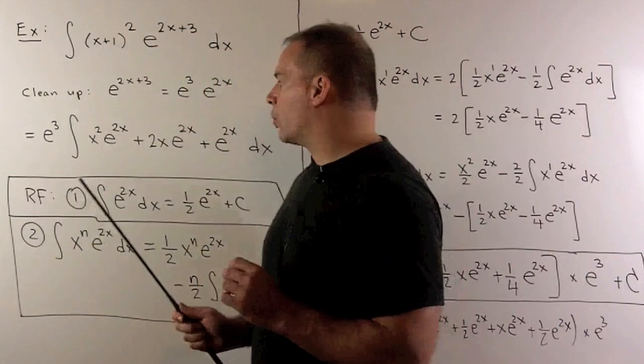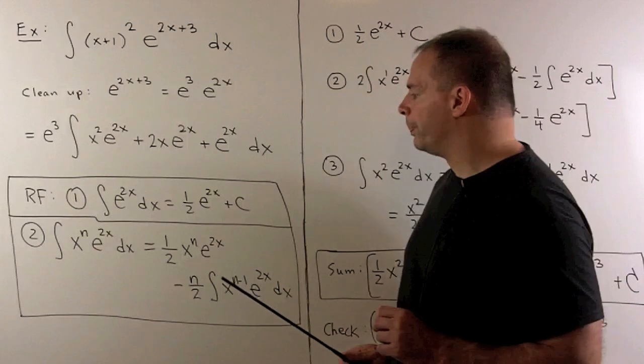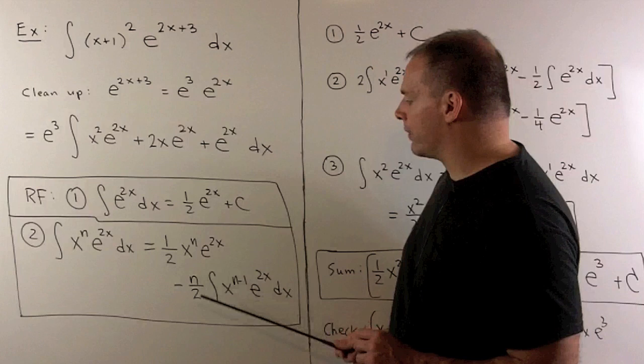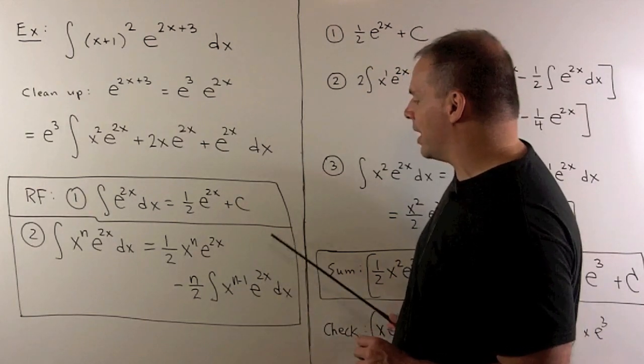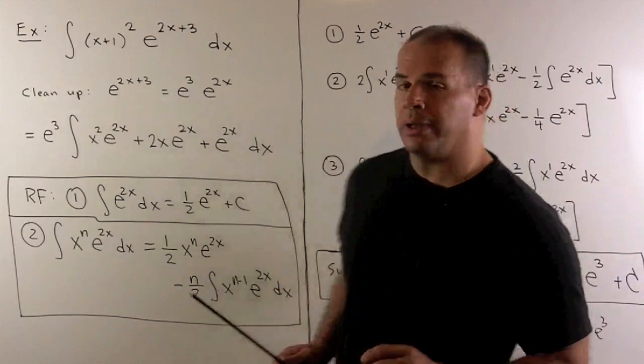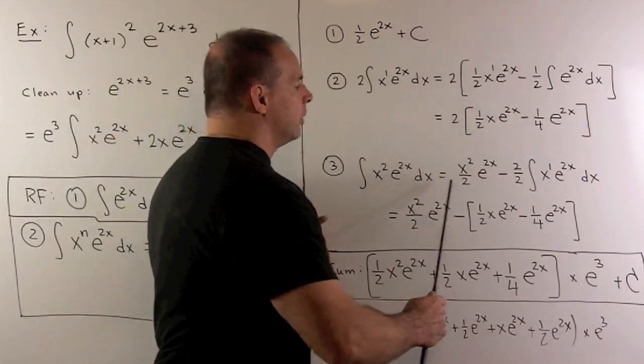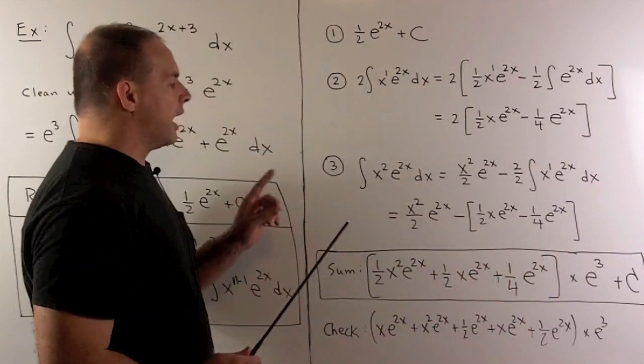Then, for the x squared e to the 2x, we apply our formula with n equals 2. So, we'll have 1 half x squared e to the 2x minus 2 over 2, indefinite integral of x e to the 2x dx. And then, we just work that out. So that gives us this, which goes to there. And then, we have this coming from here.